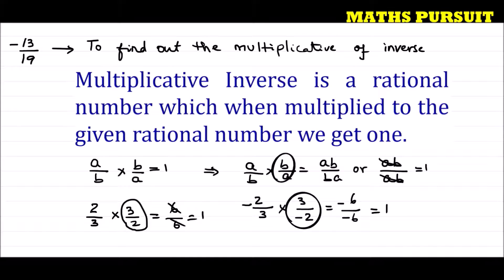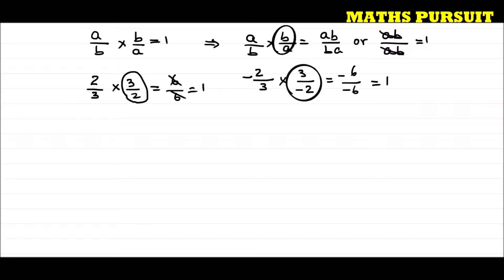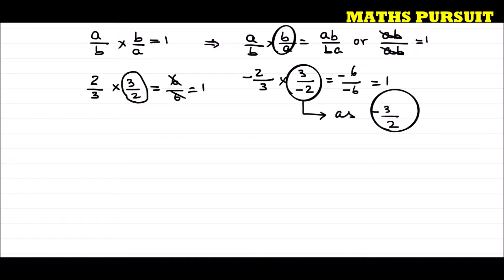But there is a trick here. We cannot say that the multiplicative inverse of minus 2 upon 3 is 3 upon minus 2, because we cannot keep a negative sign in the denominator. Instead, we should say that the multiplicative inverse of minus 2 upon 3 is minus 3 upon 2. The negative sign must always be in the numerator, not the denominator. This is simple and straightforward but a little bit technical — we need to keep this in mind.